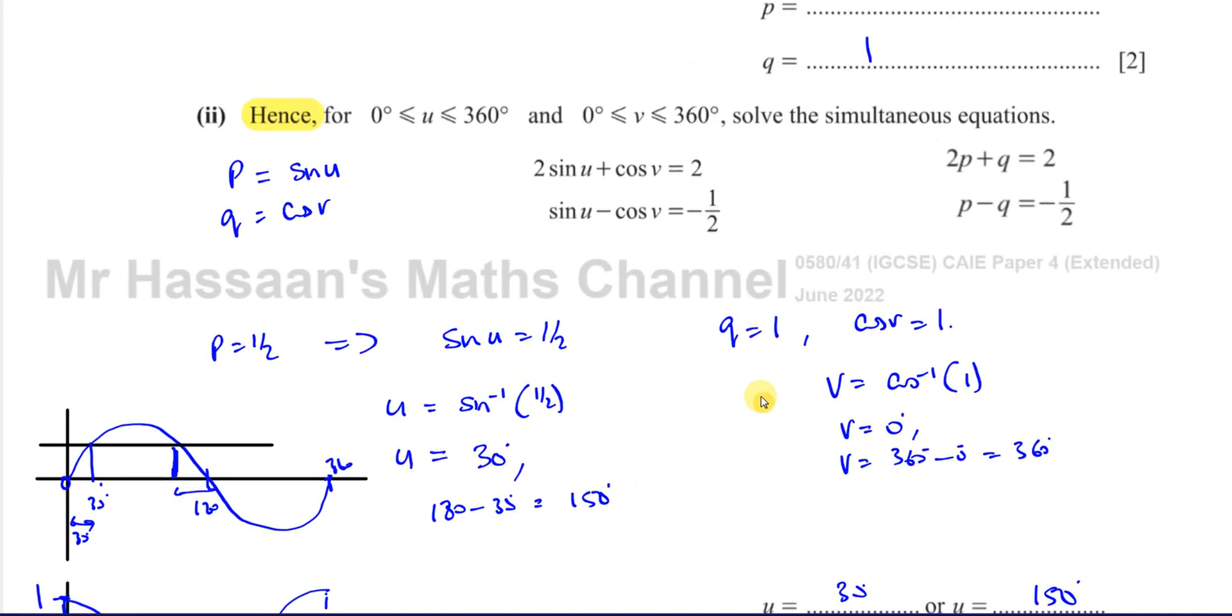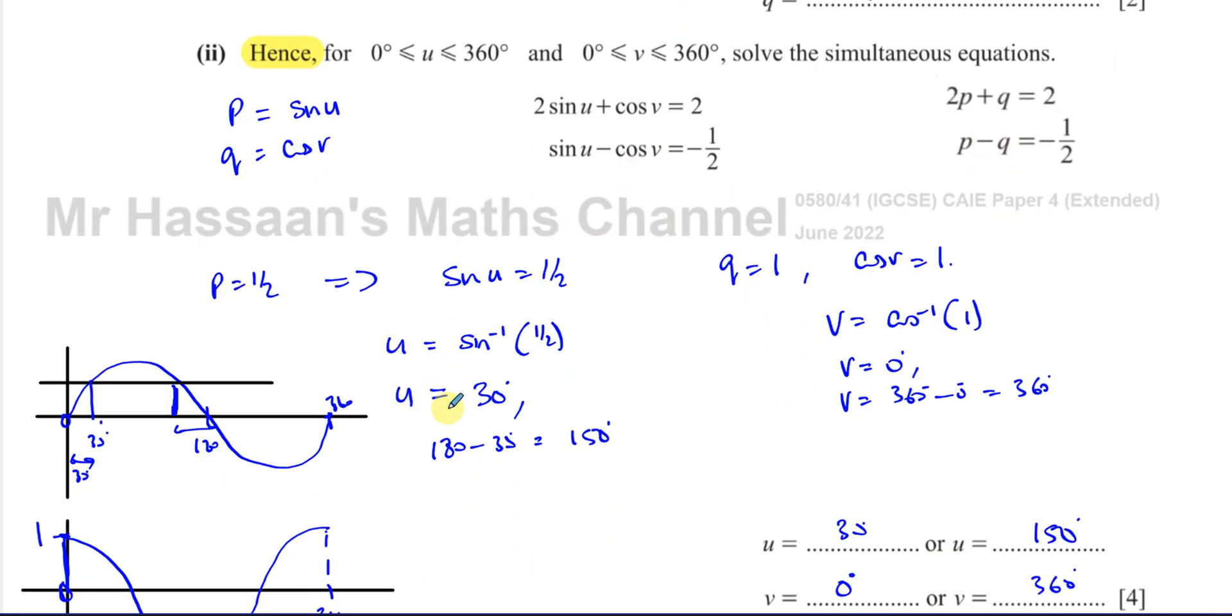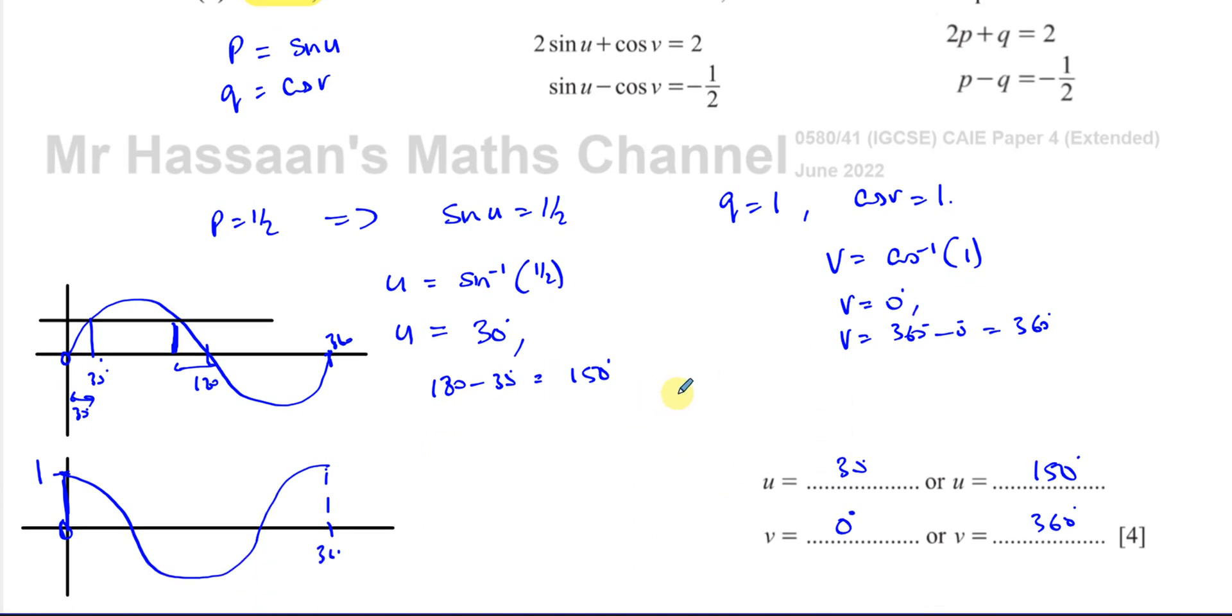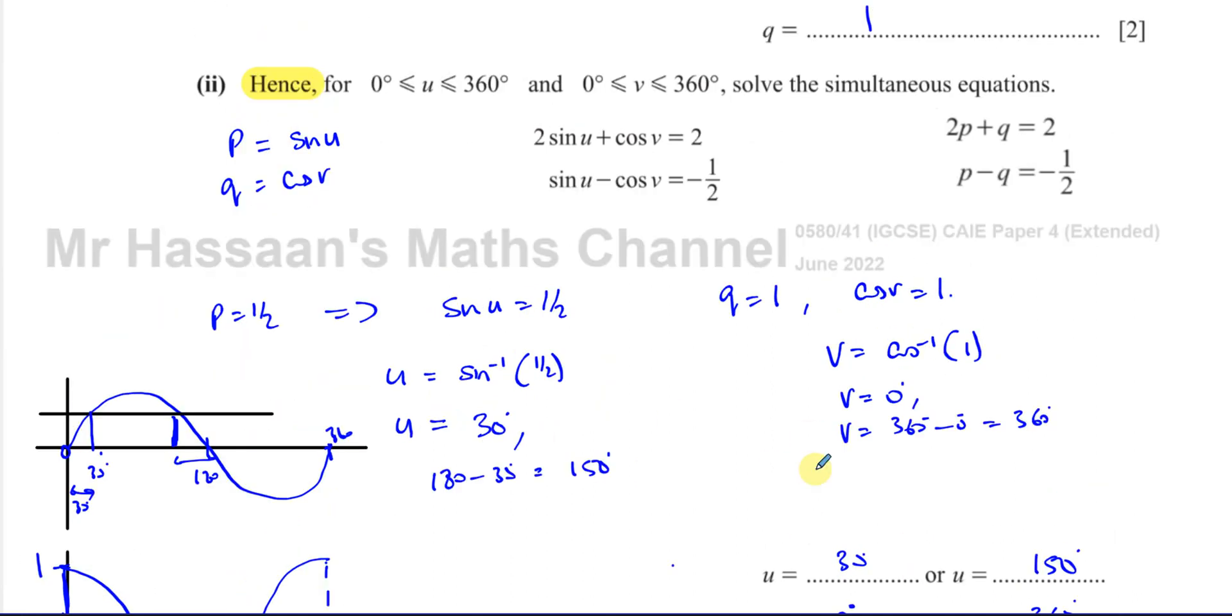We know p is a half, and if you look at this equation compared to that one, p is in the place of sine u. So sine u is a half. And we know q is 1, and cosine v is in the place of q, so cosine v is 1. We solve each equation using trigonometry. The calculator gives the principal solution. If I did inverse cosine of 1, it gives you 0. That's the first angle. Then 360 minus 0 is the other angle.